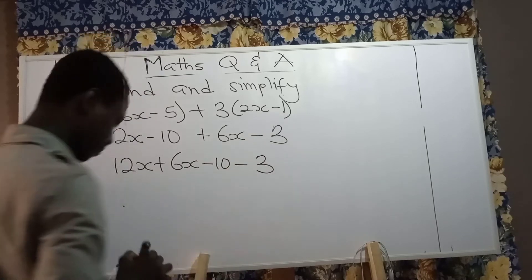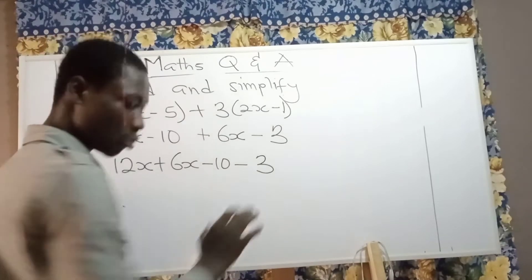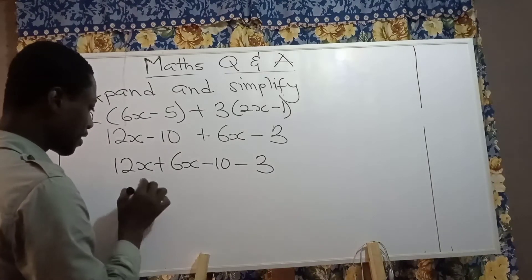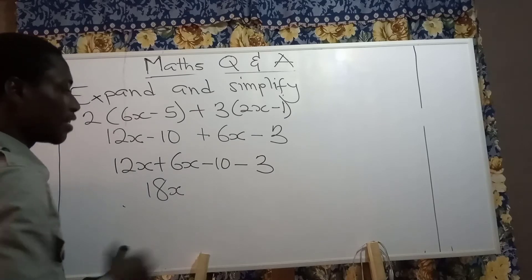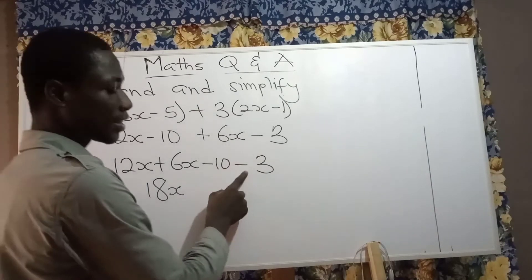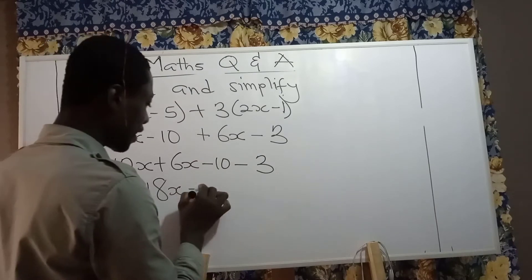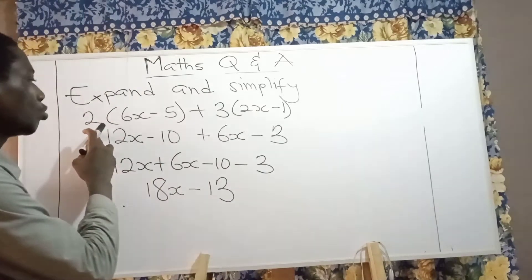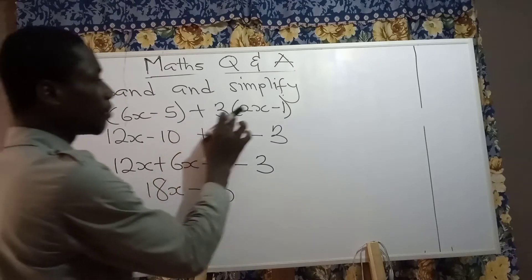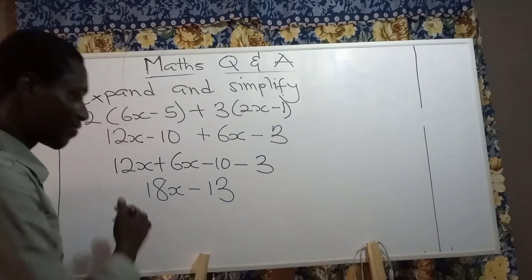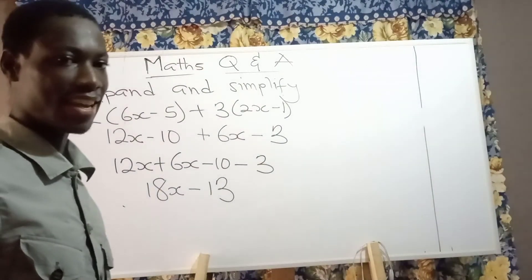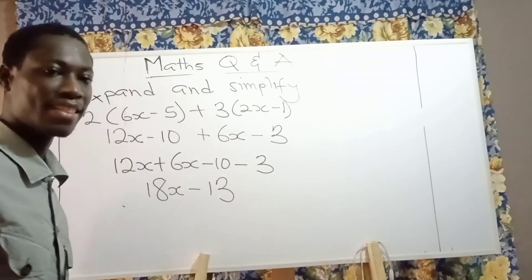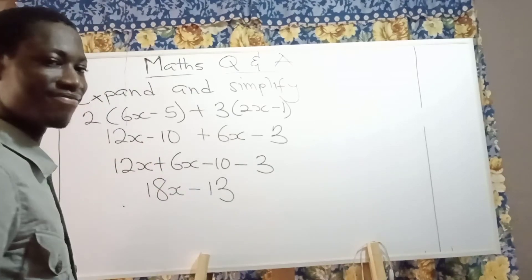12x plus 6x gives us 18x. Then negative 10 subtracting 3 gives us negative 13. So this becomes the simplest form of the expression 2 multiplying 6x minus 5, plus 3 multiplying 2x minus 1. The answer is 18x minus 13.